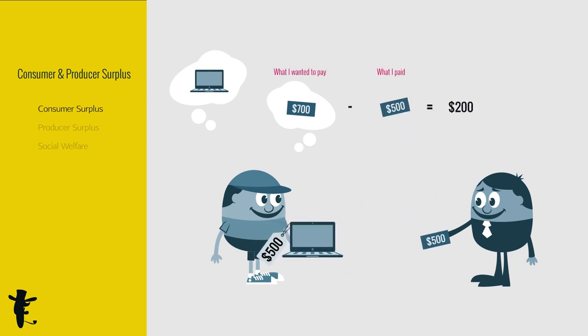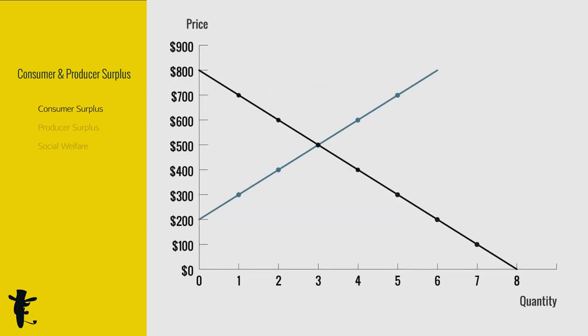Whoa, $200 of net happiness. This is my consumer surplus. On the demand curve, though everyone pays the same price at $500,